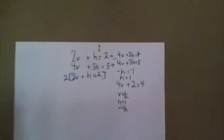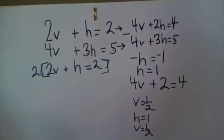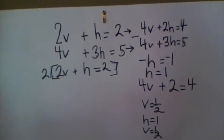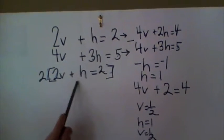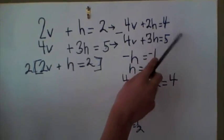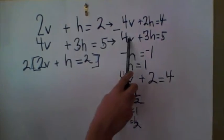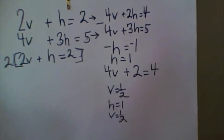And so, to make the 2v equal to the 4v, so you can subtract them to make them 0, you have to multiply the first equation by 2. So, 2 times 2v plus h equals 2. When you do that, you get 4v plus 2h equals 4, and this is 4v plus 3h equals 5. So, now you can subtract them to cancel them out.